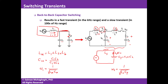Back-to-back capacitor switching consists of two transients: a faster transient at frequency ω₁, typically in the range of a few kilohertz, and a slower transient at frequency ω₂ in the range of tens to hundreds of hertz. In a system voltage waveform, you will see a high-frequency oscillation followed by a lower-frequency oscillation. When you observe two oscillations that follow one another — one high frequency, one low — that is typically indicative of back-to-back capacitor switching.